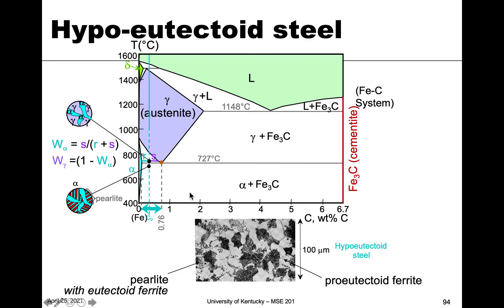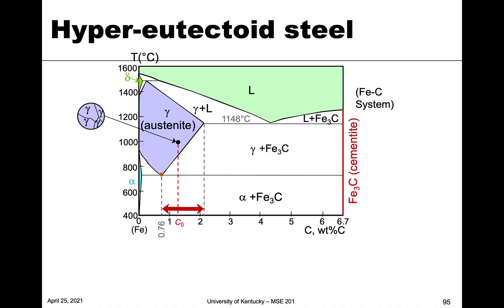And if we want to calculate the entire amount of alpha phase and the entire amount of cementite, we can do the level below the eutectoid as well. And that would be what this capital R and capital S is.